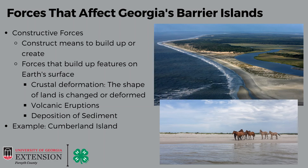For example, crustal deformation helps shape the land. This can happen because of tectonic plates moving under Earth's surface. We also have volcanic eruptions. If a volcanic eruption were to occur, that lava is going to cool off and change how an island looks.